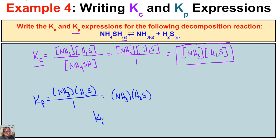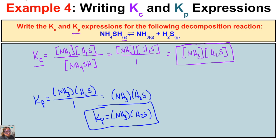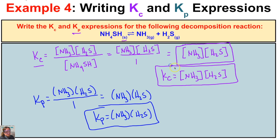So Kp equals the partial pressure of NH3 gas times the partial pressure of H2S gas. Those are our Kc and Kp expressions. If you found this helpful, click the subscribe button in the bottom right corner and feel free to leave comments or questions below.